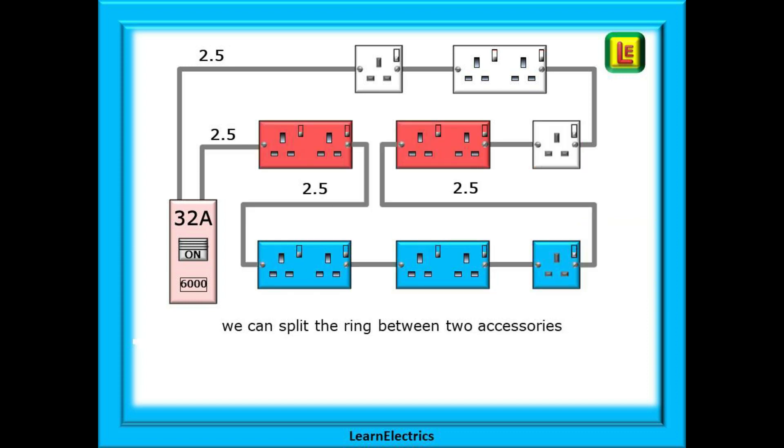It is also possible to split the ring. If two suitable sockets can be found with good access to the cables then we can break into the ring at that point and install a new part to the ring all in 2.5 millimeter twin and earth cable. In an ideal world we would remove the old cable that previously connected the two red sockets. Also be aware of the new circuit length. We should avoid adding cable that is so long that it causes the maximum permitted ZS to be exceeded and we will show you this towards the end of this video.